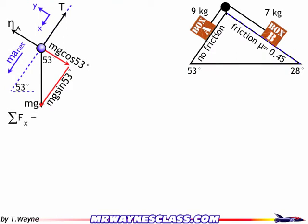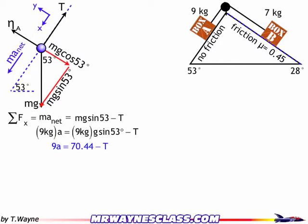Sum of the forces in the x direction — that's the same as ma net, so when I sum up the forces I'm going to get a non-zero number. I'll write ma net rather than F net, because it'll help with substitutions later. That equals mg sine 53 minus tension. Putting in numbers and units and doing the math, I get: 9a = 70.44 − T. I'm keeping more decimals in my calculator but writing 70.44 for brevity here.